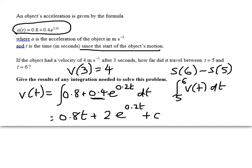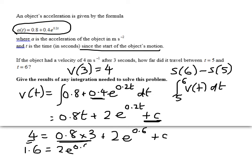Now, we know that v of 3 equals 4, and so we can work out the plus c. So we get 4 is equal to 0.8 times 3 plus 2 e to the 0.6 plus c. So that gives me 1.6 equals 2 e to the 0.6 plus c. If I pop that in my calculator, I'll get c is equal to 1.6 minus 2 e to the 0.6, and that equals negative 2.04. I'm cheating here. I'm actually just reading that number off the schedule, so I haven't checked all the rounding and everything, but that should be right. So that gives me my velocity function.